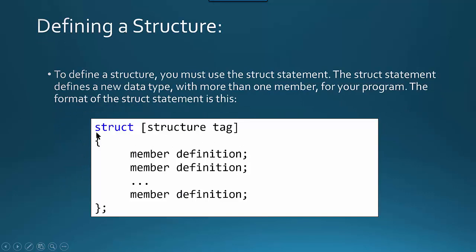The syntax for a struct is as follows. You use the struct keyword, and then you have a structure tag, which is the name of the struct. Then you have several definitions inside of curly braces. Now this does not in itself declare a variable — all it does is define the format for the information that will be stored in a variable. We say that a struct is a user-defined type, and we'll see why in a little bit.